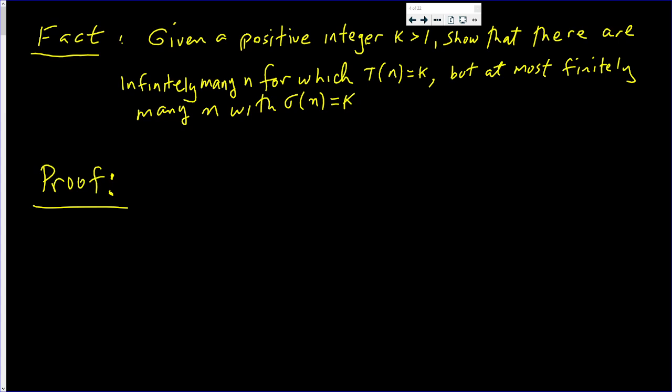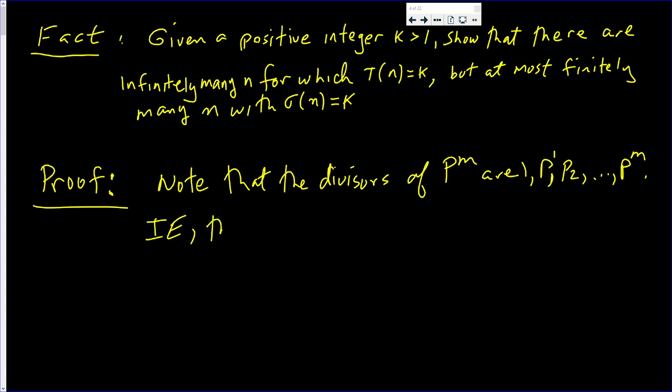Okay. So, note the following. Note that the divisors of p to the m are 1, p to the 1, p squared, all the way up to p to the m. That is, there are m plus 1 divisors of p to the m.